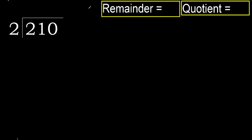210 divided by 2. 2 is not less, therefore start with 2. 2 multiplied by which number is nearest to 2 but not greater? 2 multiplied by 2 is 4.